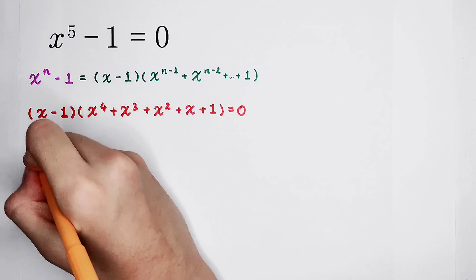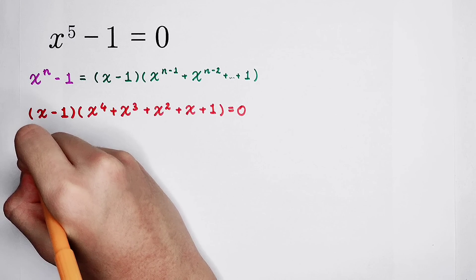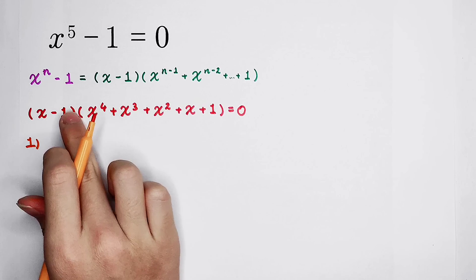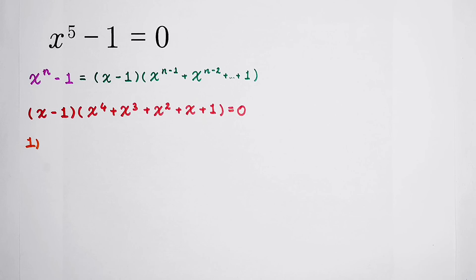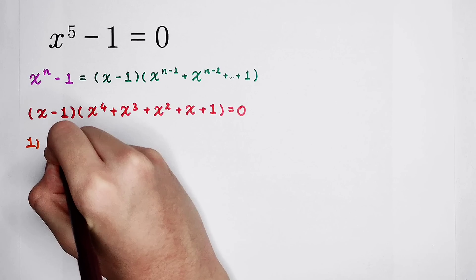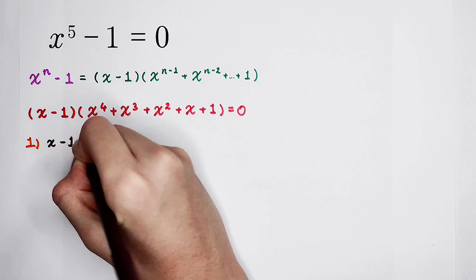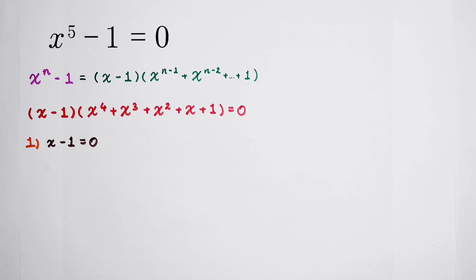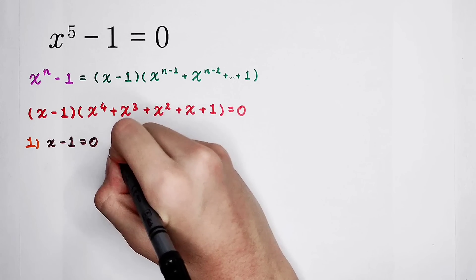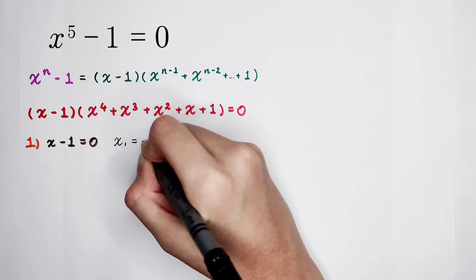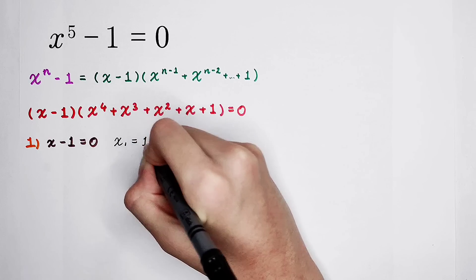So now we have two cases. First, when x minus 1 is equal to 0, this factor equals 0, and x is just 1. Everyone knows that. So x₁ is equal to 1.